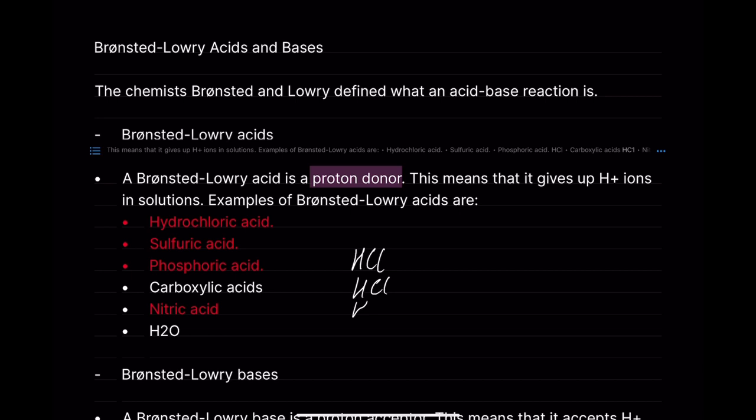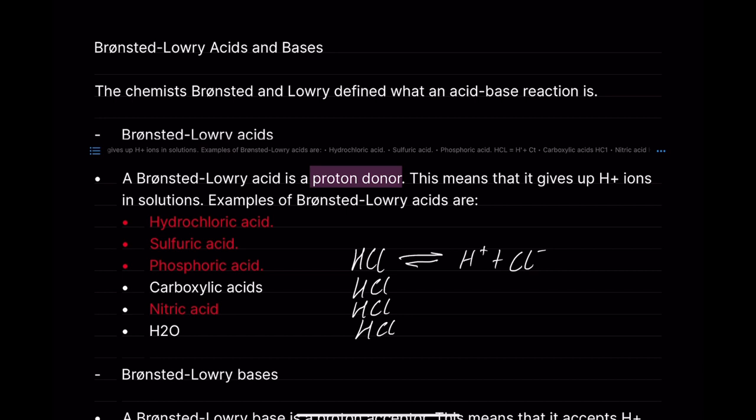With a strong acid like HCl, all molecules dissociate into H+ plus Cl−. They all go in this direction. With a strong acid, the equilibrium is so far to the right we consider it effectively a forward reaction — though technically we still show the equilibrium sign.